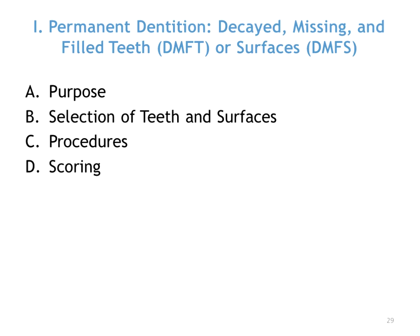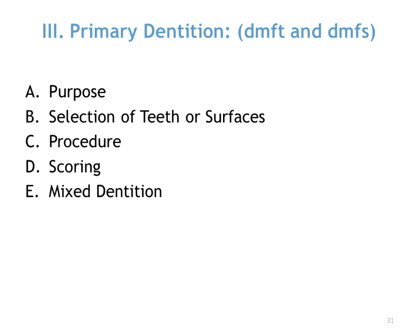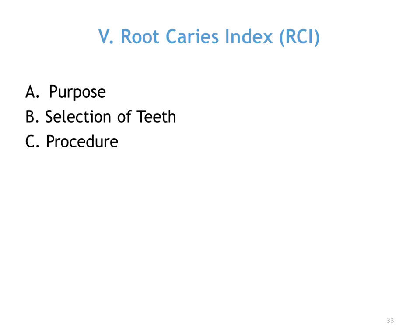Teeth that aren't counted include third molars or unerupted teeth. For primary teeth, the equivalent indices — Decayed, Missing or Extracted, and Filled — are used with lowercase letters: DEF or DF. For the primary dentition, DMFT and DMFS equivalents also use lowercase letters. Early Childhood Caries, or ECC, is another index — it used to be called Baby Bottle Caries — so there is a specific index for that as well.